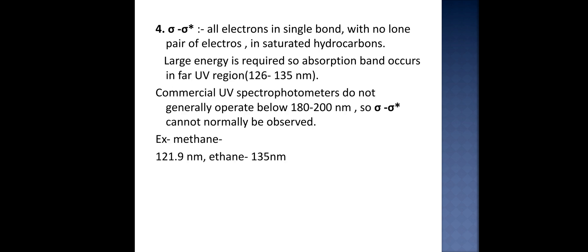Fourth type of transition includes σ to σ* anti-bonding orbital. In this, all electrons in the single bonds with no lone pair of electrons are involved in saturated hydrocarbons. In this type of transition, large energy is required, so absorption band occurs in the far UV range. The range lies from 126 to 135 nanometers.